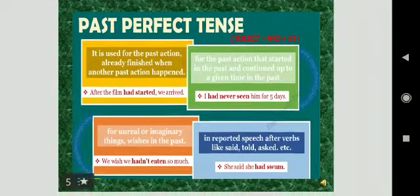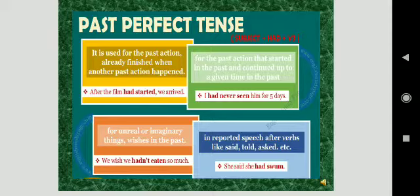One more example for you. Past perfect tense is used for the past action already finished when another past action happened. After the film had started we arrived. What is the past action in this? In this sentence it is used for the past action already finished. Had started is finished and you arrived is the action happened next.